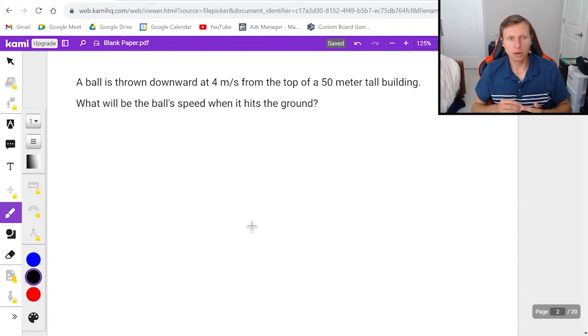So here's the next one. A ball is thrown downward at 4 meters per second from the top of a 50 meter tall building. What will be the ball's speed when it hits the ground? The first thing I want to address is will the ball's speed be zero? Because that's the number one most popular answer for a question like this. It also happens to be the number one wrong answer because the speed is not zero when it hits the ground. Let me explain why.